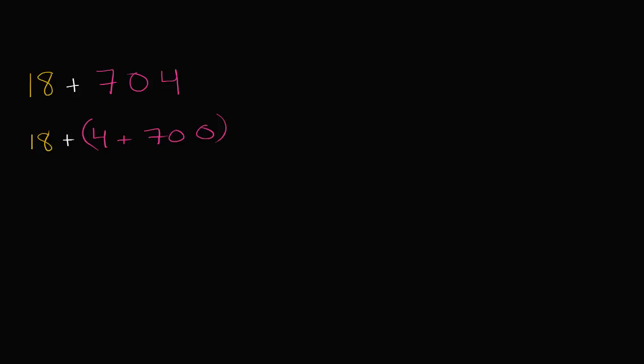And then, I could just switch the order in which I add. So, this is the same thing as 18 plus 4 plus 700. And now, I could add the 18 and the 4 first. Now, what's 18 plus 4? It's 22. And then, I have plus 700. And now, this is pretty easy to compute. And all of these are going to be equal to each other. 22 plus 700, I could do that in my head. That's going to be 722.